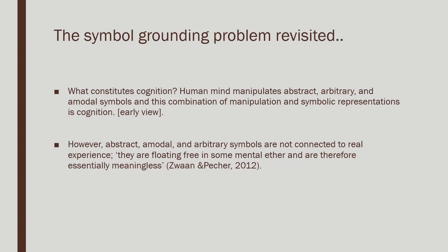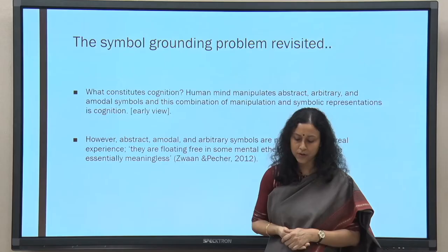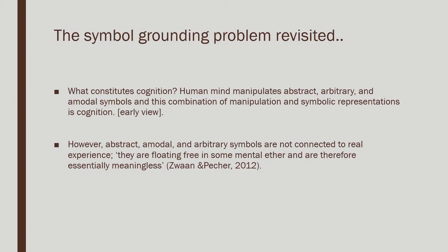Let us go back and refresh our memory. We started this course with the question of what is cognition. The most dominant theory talked about an abstract, amodal interpretation of cognition — the human mind manipulates abstract, arbitrary, and amodal symbols, and this combination of manipulation and symbolic representation is the basic understanding of cognition.